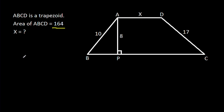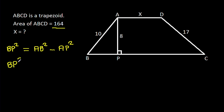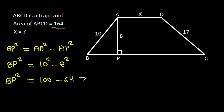So, BP² will be AB² minus AP². BP² is 10² minus 8², which is 100 minus 64. That will be 36. So BP will be 6.